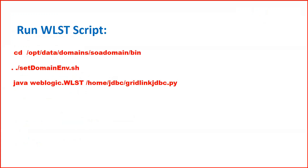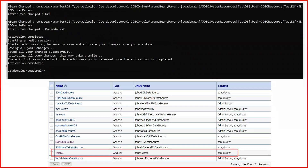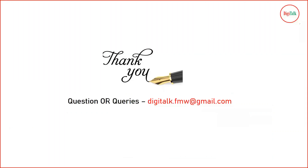Once you have modified the parameters, you can run the script using the WebLogic WLST command. First go to your domain bin directory, run the setDomainEnv.sh file (or .bat on Windows), and then run the script file with all the content and changes as mentioned. Once you run it, it will take some time. The output during the conversion will be shown, and when it is finished you will see that your data source has been converted to the grid link data source.